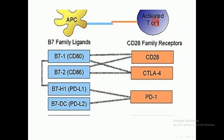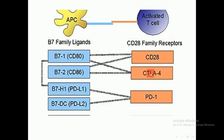Here is the antigen-presenting cell and the activated T cell. The CD28 receptor binds to B7-family ligands, providing the second signal in T lymphocyte activation. There is also an inhibitory molecule that blocks this second signal of T lymphocyte activation.